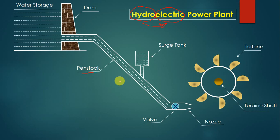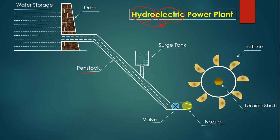The actual diameter of the penstock is two to three meters, which is almost ten feet, so you can imagine how large this pipeline is. At the end of this pipeline, there is a valve for opening and closing the flow of water to the turbine. This part is called a nozzle. The nozzle is a converging area pipe where pressure energy gets converted into kinetic energy. At the entry of the nozzle there is high pressure energy, and at the exit there is a high-velocity jet of water.